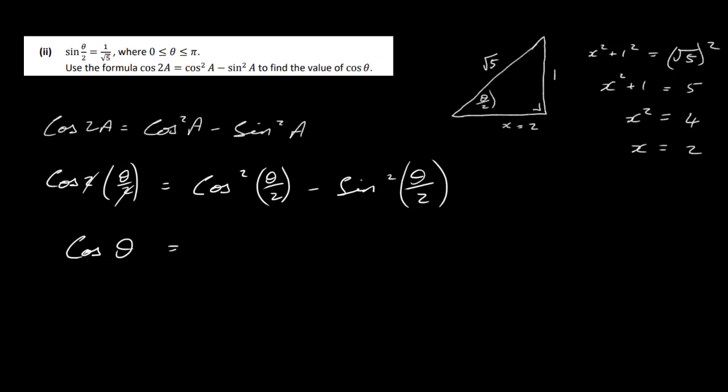So let's do the right-hand side then. We have cos squared theta over 2. Now, the cos of theta over 2 is 2 over root 5. So really, this is just 2 over root 5 squared. Where sine of theta over 2 is 1 over root 5, so that's 1 over root 5 here, and that's squared.